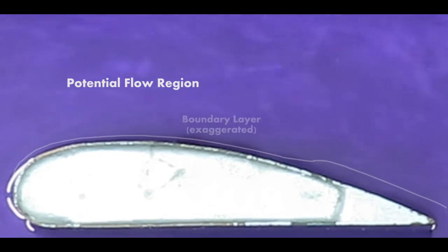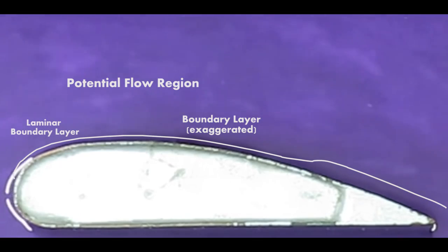So if we zoom in on the top of the airfoil, we have the potential flow region again on the outer side. And then what I've drawn in is a boundary layer, exaggerated. And so the boundary layer goes from being laminar at the front through transition, and eventually transitions to a turbulent boundary layer.